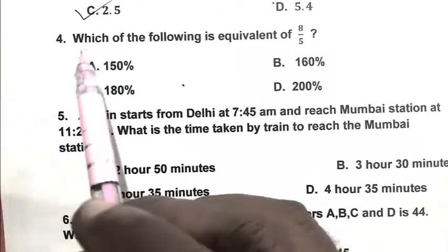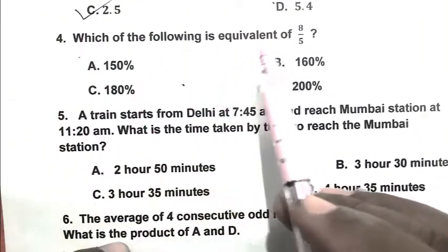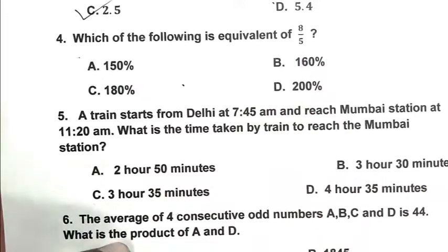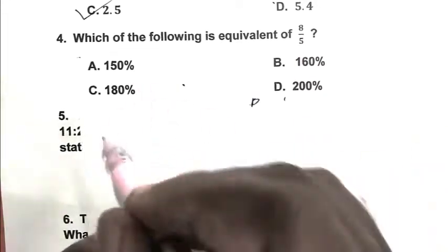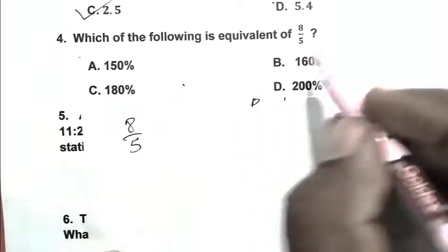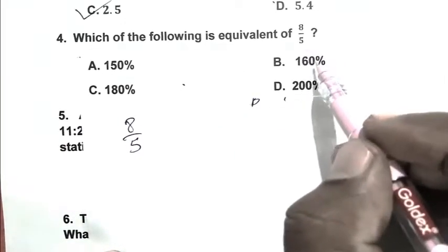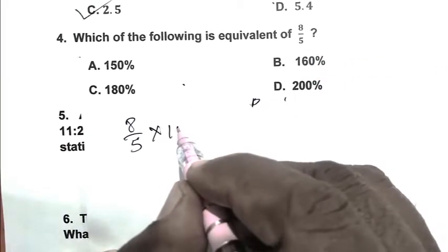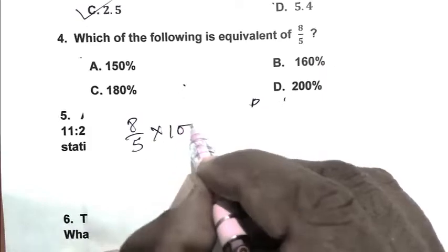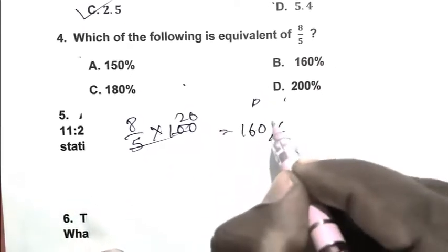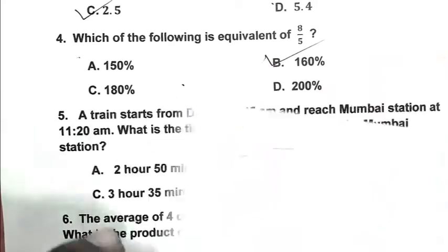Question number 4. Which of the following is equivalent to 8 upon 5? We write the expression 8 upon 5. We have to convert it into a percentage, so we multiply it by 100. That gives 160 percent. So B is the right answer.